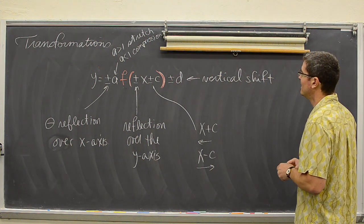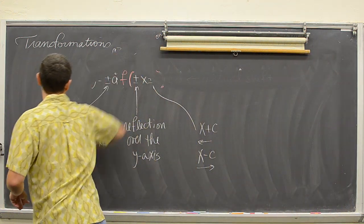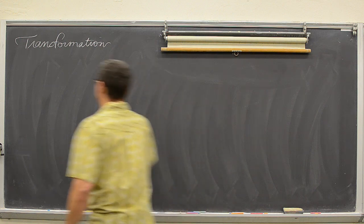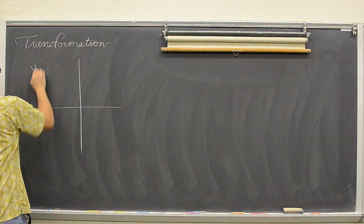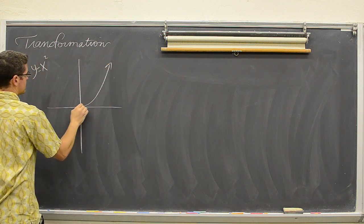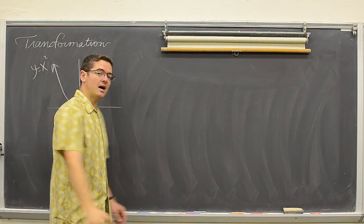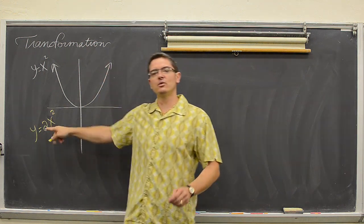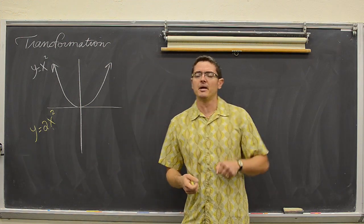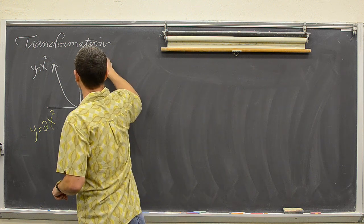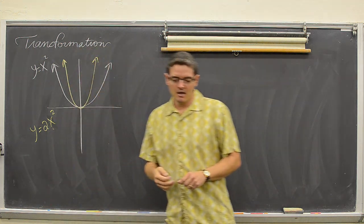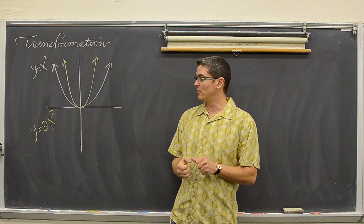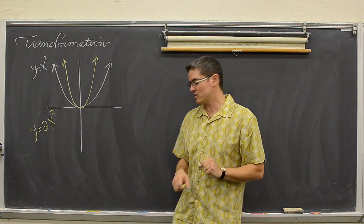One last example. When you graph a parabola — the parent function y equals x squared — and you have y equals 2x squared, that is a vertical stretch. If a is bigger than one it pulls the graph up, and with parabolas that makes them look skinnier. But a vertical stretch does not really make a graph skinnier — let me show you what I mean.